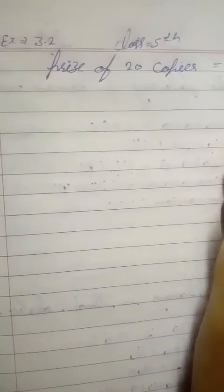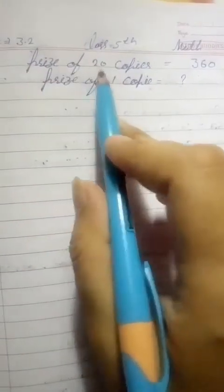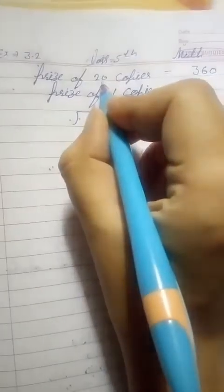Write the first line: price of 20 copies is 360. Second line: price of one copy - we need to find this, so write a question mark here. Price of 20 copies is 360, price of one copy we need to find. So first, this is dividend and this is divisor. Write here 360 and here 20.